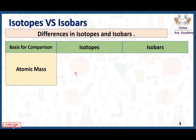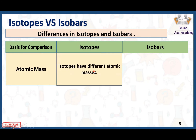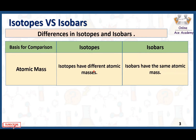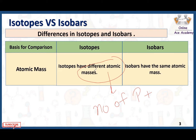Regarding atomic mass: in isotopes, the atomic mass is different, while isobars are the ones that have the same atomic mass. Here, atomic mass is the combination of the number of protons plus the number of neutrons in the nucleus. Atomic number, on the other hand, is just the number of protons present in an atom.